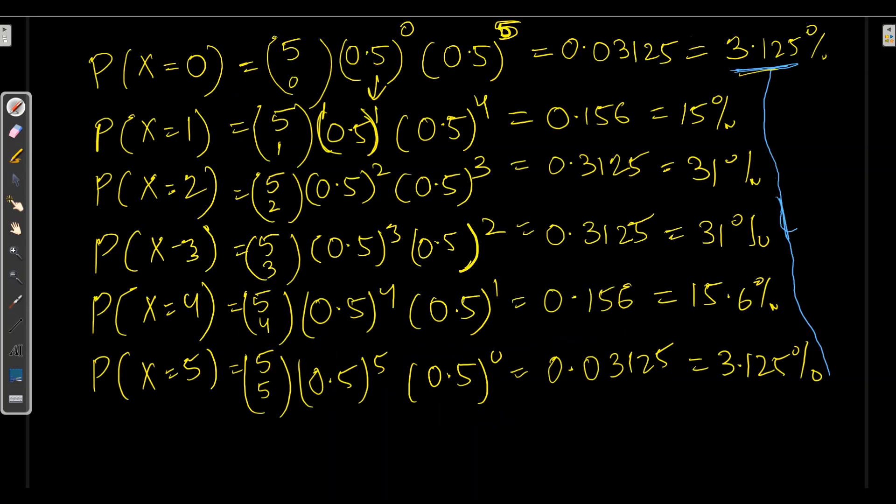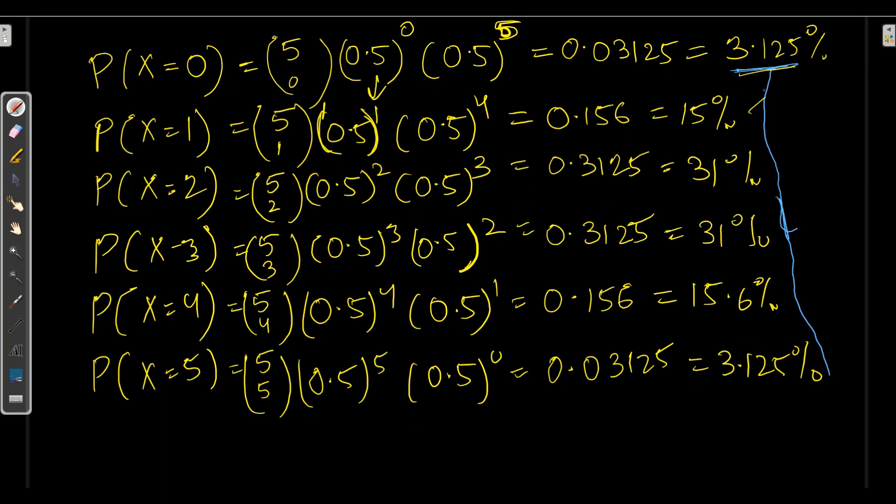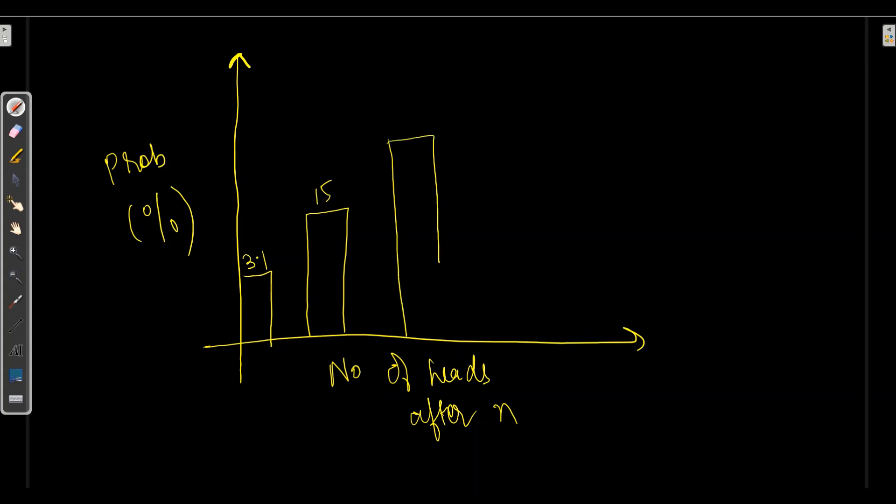So here I will take X and Y where in Y axis I will take probability of success in percentage and X axis will be number of heads after flipping N times. So first value was 3.125 which is with 0, then 15 and then 31. Again it is 31 and then 15 and then 3.1. So if we smoothen it, we can see there is a bell curve graph over here.